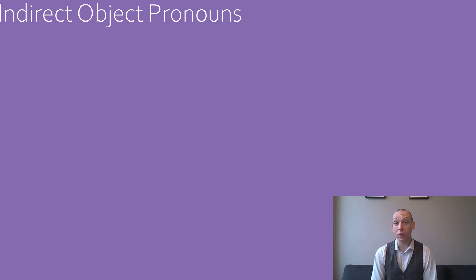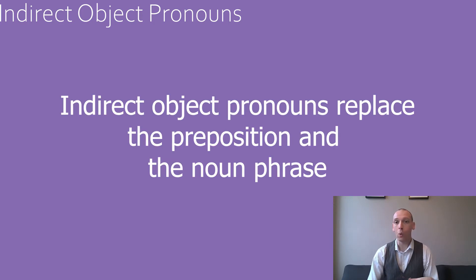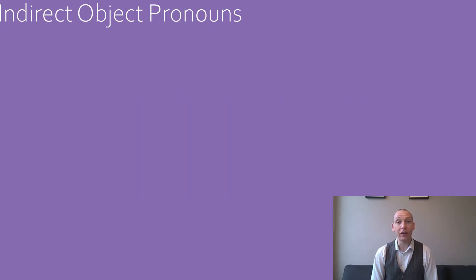Now that we know a little bit about indirect objects, we can look at the indirect object pronouns in French. When we use an indirect object pronoun, we replace the word à or pour as well as the noun phrase we are wishing to replace. I'll now present each of the indirect object pronouns with their corresponding subject pronoun.